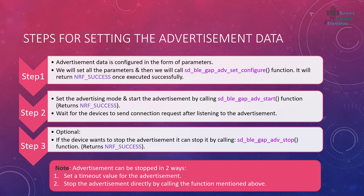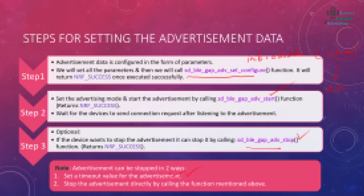As we have seen previously, the advertisement function is one of the main functions that configures everything. We also have an init variable, and inside it we have ADV data where we add specific data types. This data gets configured, and we can start or stop the advertisement using the relevant functions, including setting a timeout.